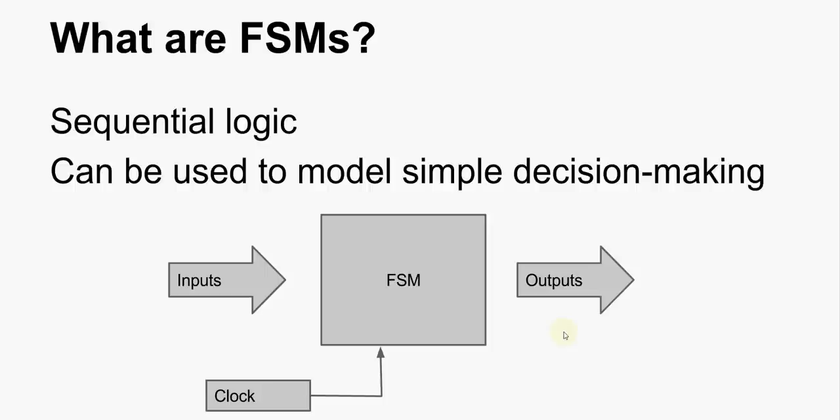Now, state machines are sequential logic. They are very low level. High level state machines are a thing, but they'll be covered later in the course. They can be used to model some simple decision making. The state machine has some memory and some logic. So, based on inputs, the state machine has a saved state and that changes. And as it changes, outputs are produced. It changes state on every clock cycle.